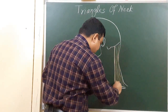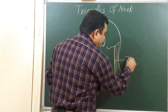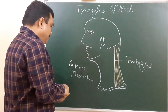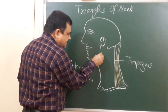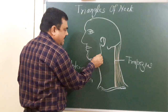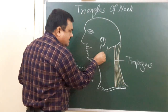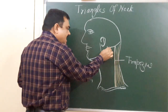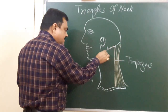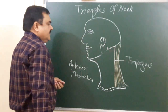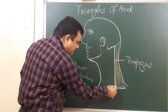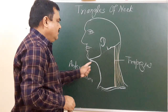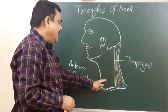The superior boundary is the base of the mandible and an imaginary line between the angle of the mandible to the mastoid process, along with the superior nuchal line. The inferior boundary is the clavicle. So this side of the neck is quadrilateral in shape.